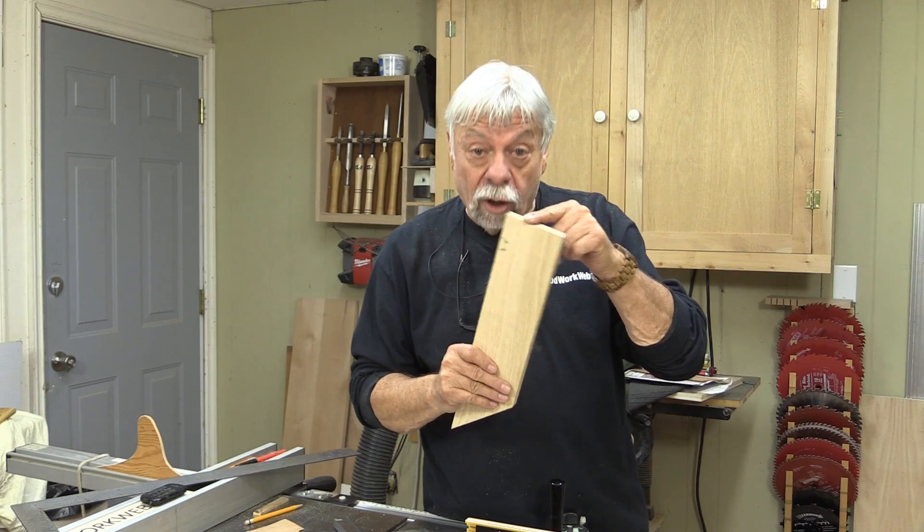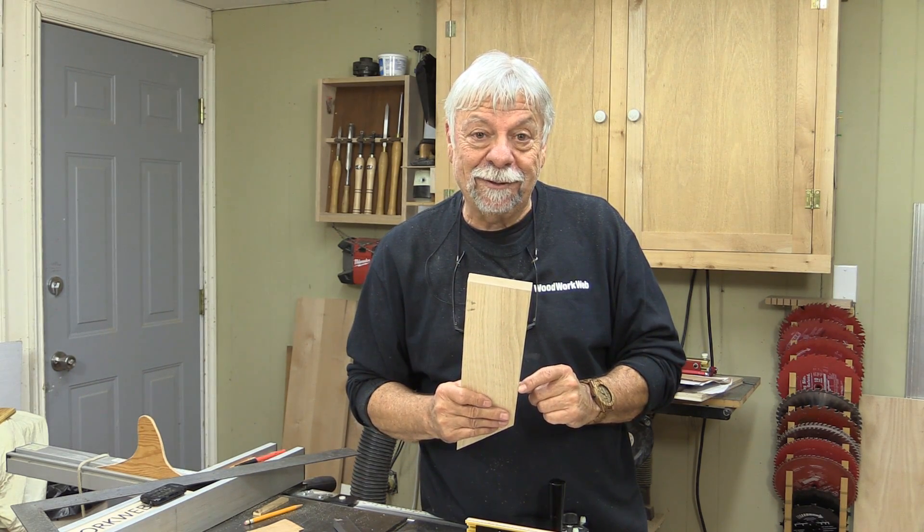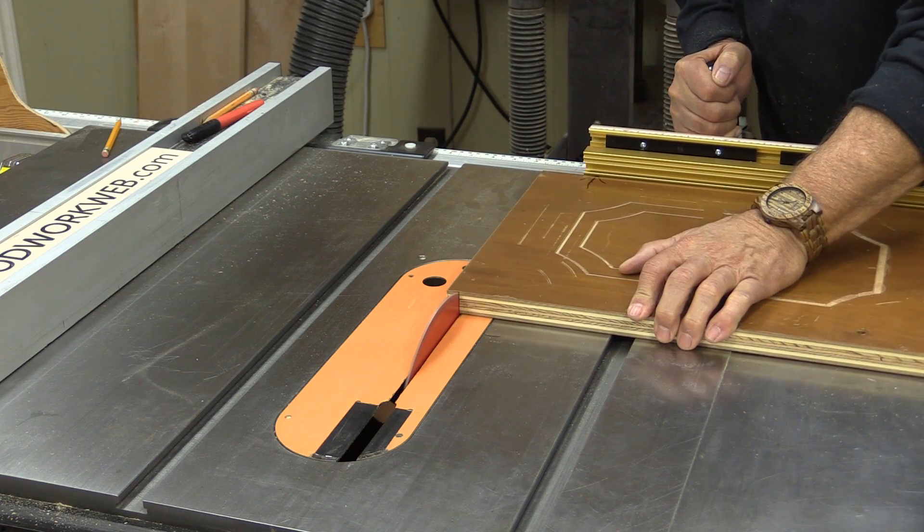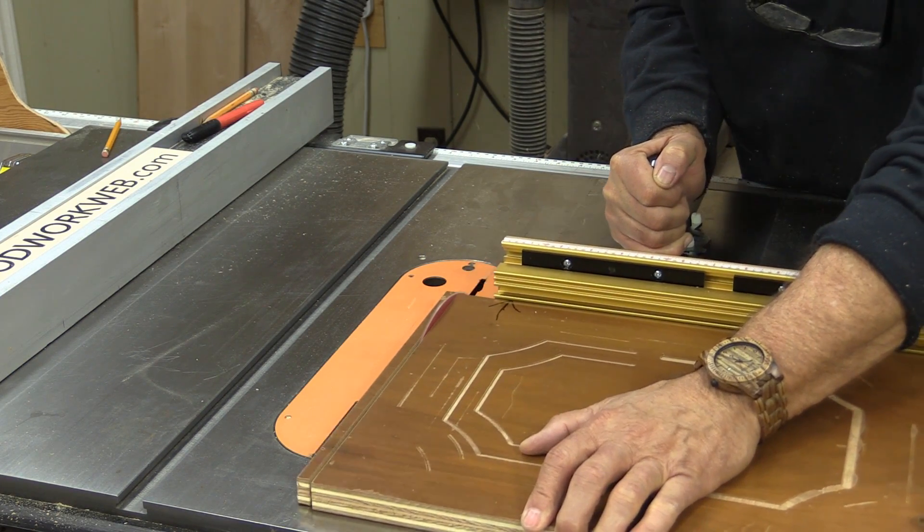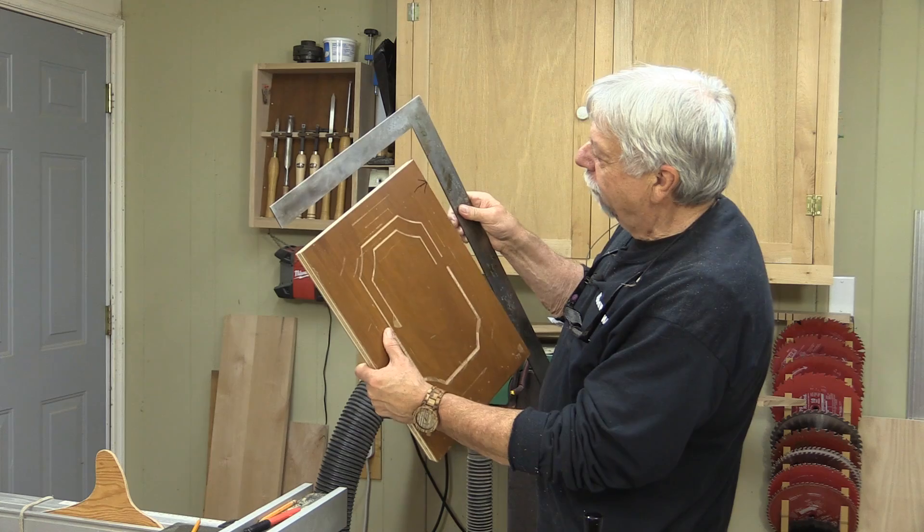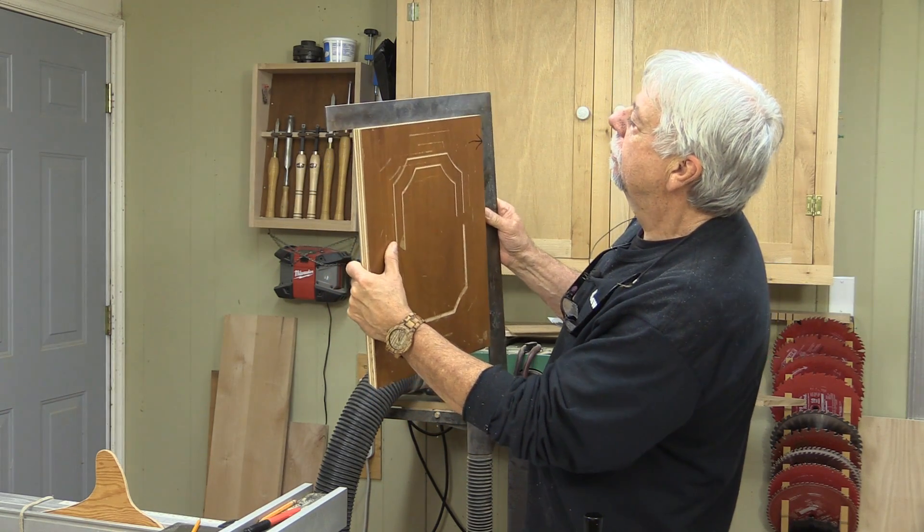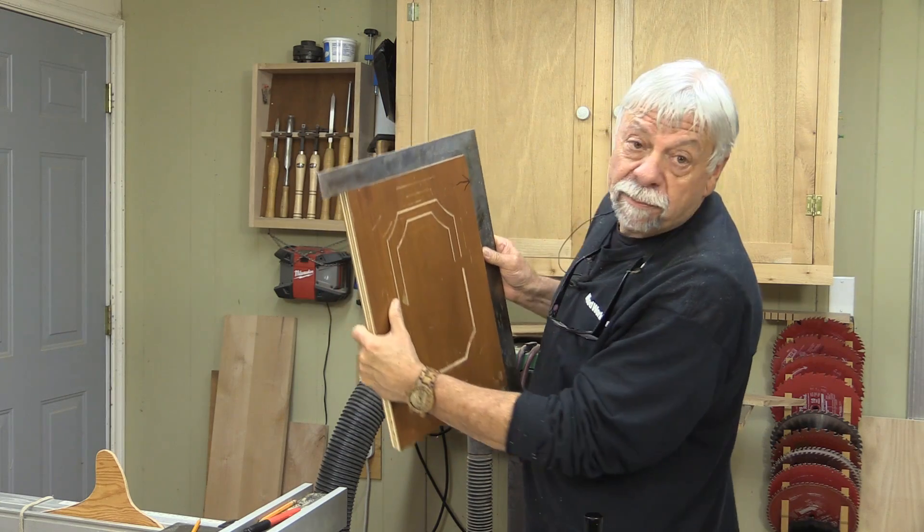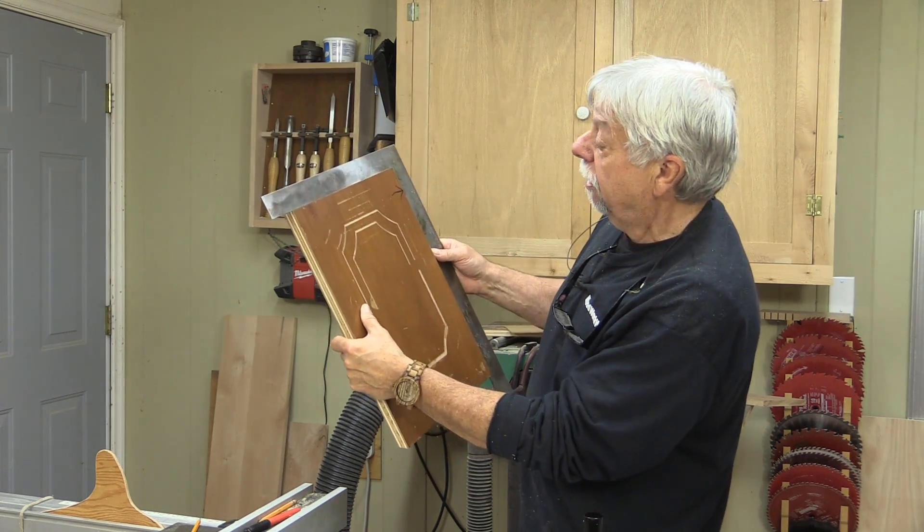Okay, well let's check this and see. There's the arrow that was the side that was against the fence and yeah, that's perfect. That board is 12 inches wide so that's perfect, that's excellent.